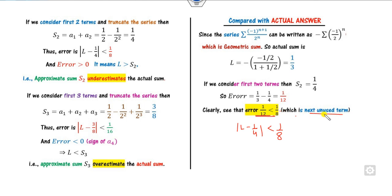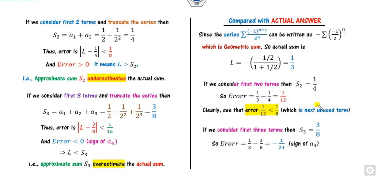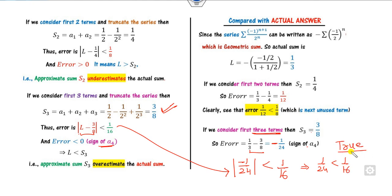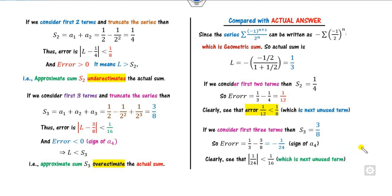If you consider the first three terms, S_3 will be 3/8. Substituting here, L minus 3/8 is minus 1/24, which is negative — matching the sign of the next term. And the absolute value 1/24 is less than 1/16, the next unused term. You can see 1/24 is always less than 1/16, which is true. So the estimation theorem is well established and verified by this concept.